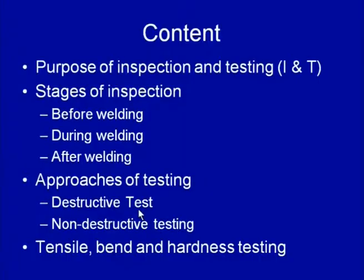In this chapter, we will talk about the purpose of inspection and testing of weld joints, and then we will see the different stages where we should perform this inspection. There are three stages: one is before welding, second during welding, and third after welding. After welding, we try to assess the weld joint qualitatively and quantitatively. To assess the weld joint quantitatively, mainly destructive tests are used, while qualitative assessment is done with the help of non-destructive tests.